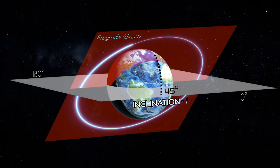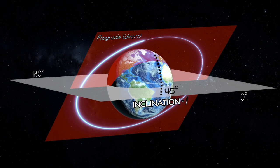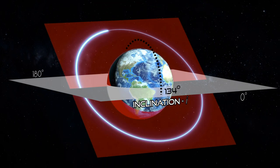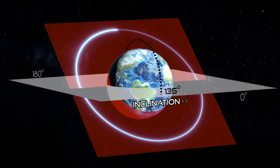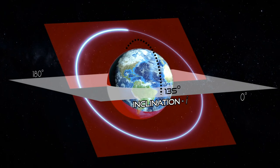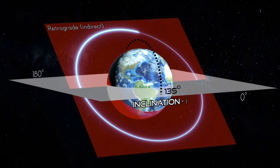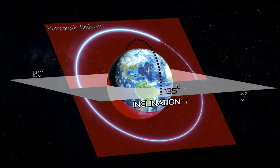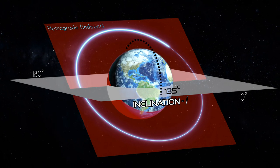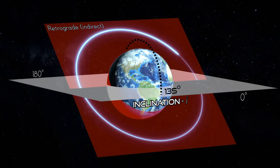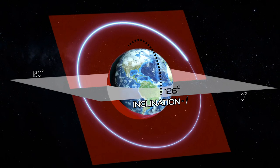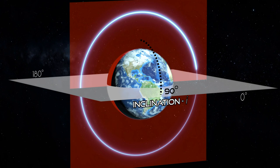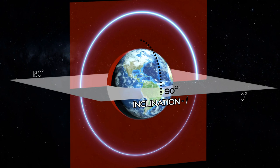However, if the inclination is between 90 and 180 degrees, the satellite is said to be retrograde, or indirect, going against the direction of Earth's rotation. If the inclination is exactly 90 degrees, the orbit is polar.